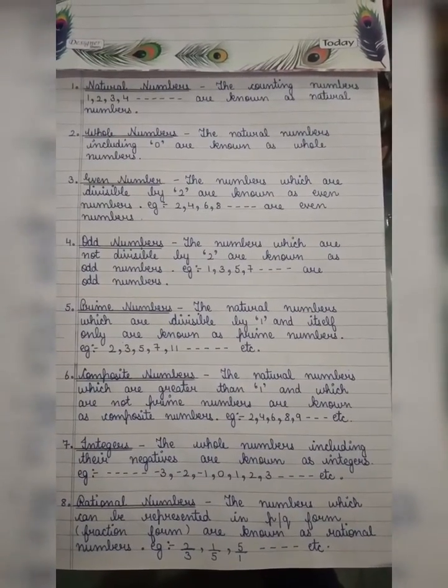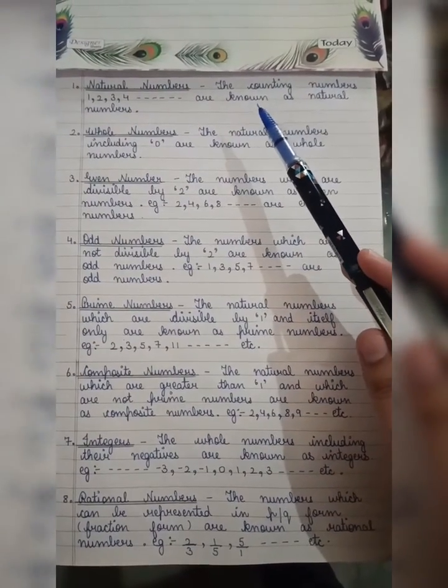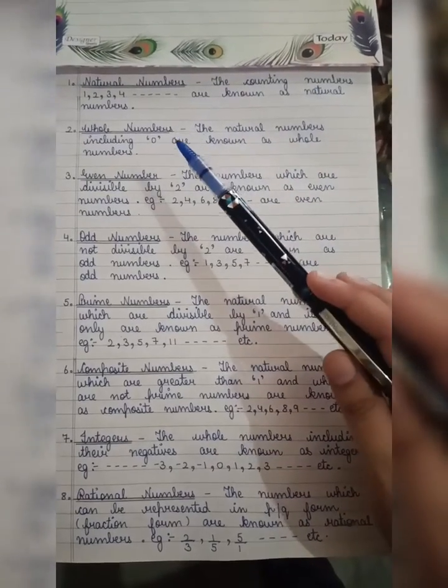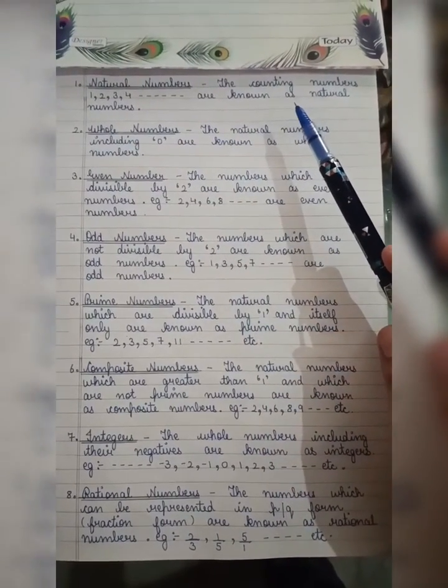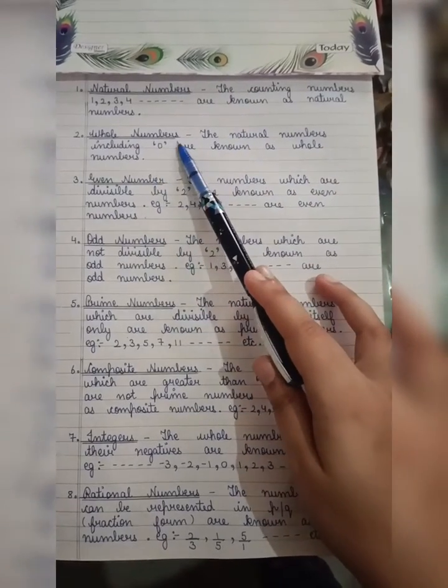I am going to share this video. Natural numbers - the counting numbers which start from 1 and go up to infinity are known as natural numbers.